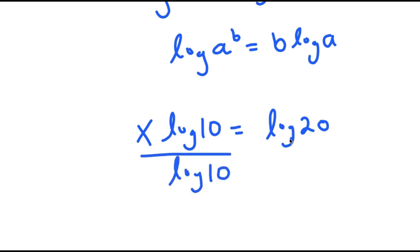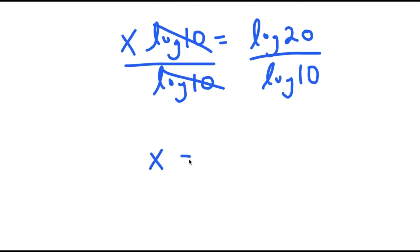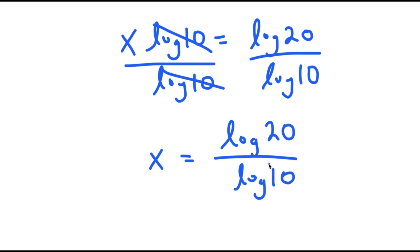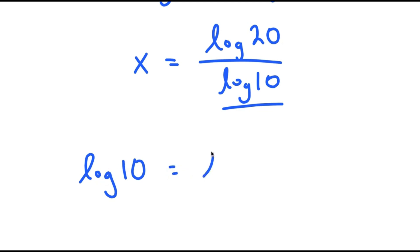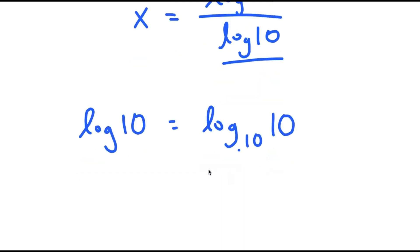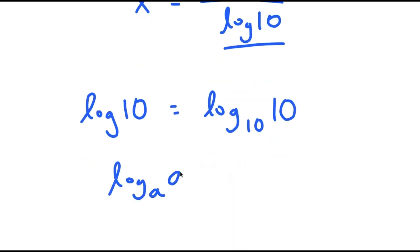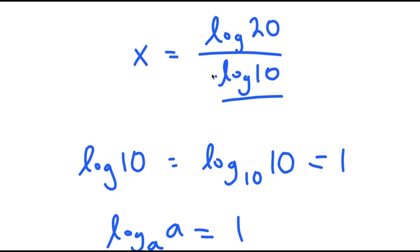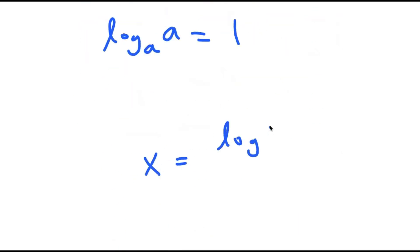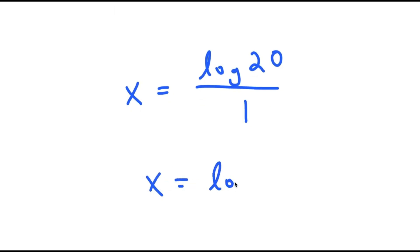From here, I'm going to divide both sides by log 10. So these two cancel out, and I get x is equal to log 20 over log 10. Now, log of a number means log base 10 of that number. And if I have something in the form log base a of a, this is just equal to 1, meaning log of 10 is equal to 1. So I get x is equal to log 20 over 1, which is just log 20.